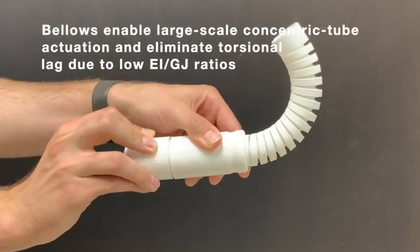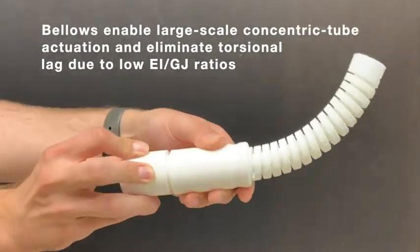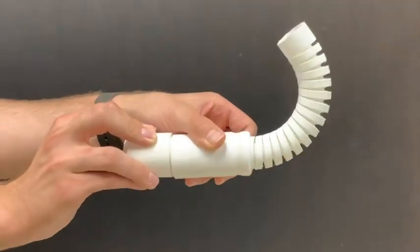Bellows enable large-scale concentric tube actuation and eliminate torsional lag due to low EI over GJ ratios, which is the ratio of flexural rigidity to torsional rigidity.